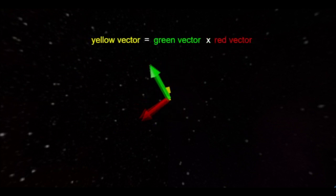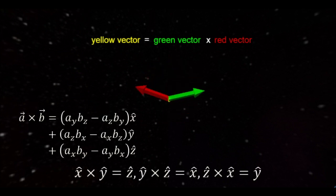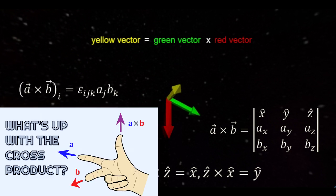On the other hand, the cross product multiplies two vectors and produces a third vector that is perpendicular to the first two. There are many ways to calculate the cross product, which is a topic that deserves a video all its own.